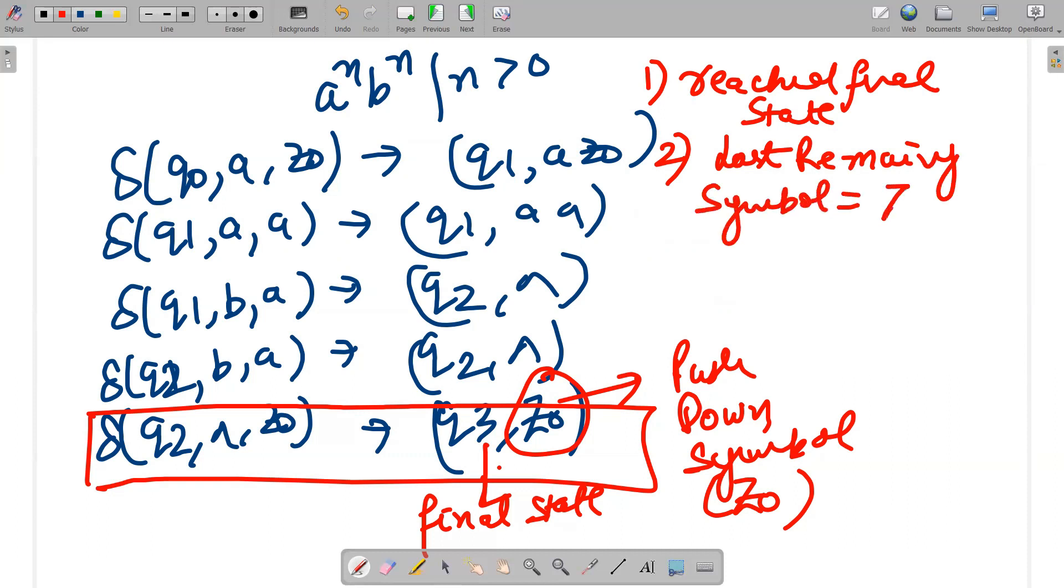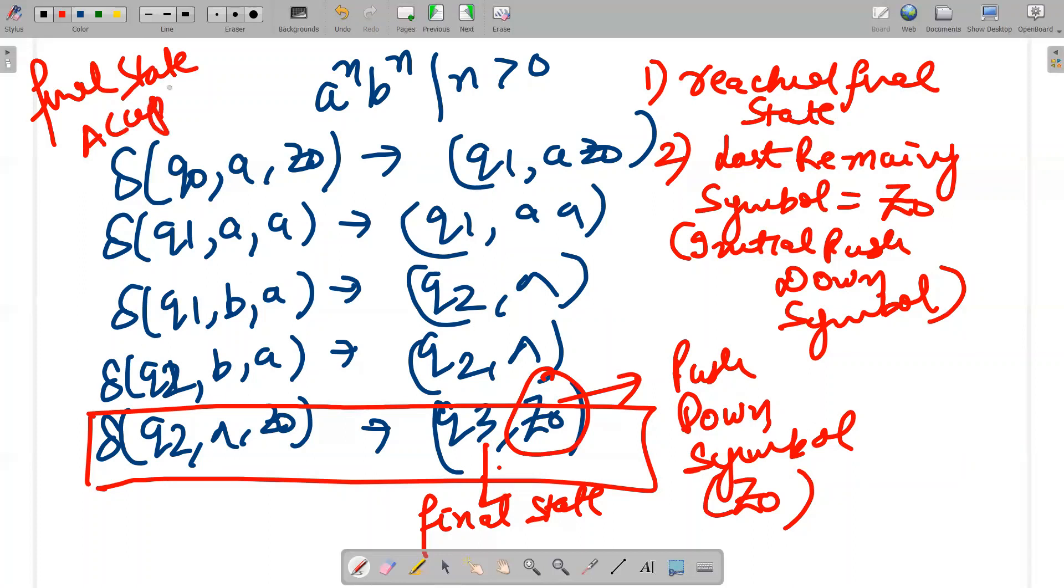is z0, which is the initial pushdown symbol. This is known as final state acceptance.